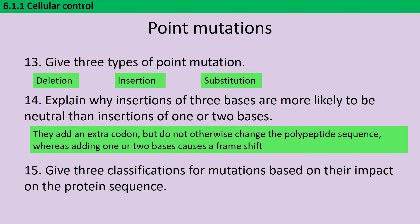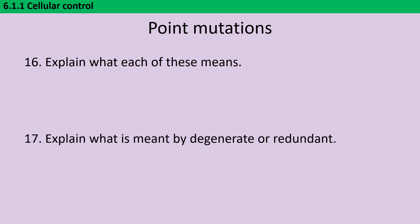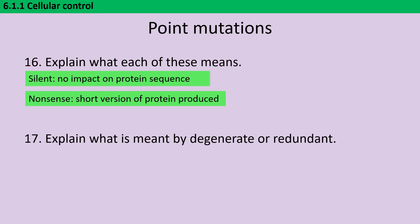If we classify mutations based on their impact on the protein sequence, they can be silent — they don't impact it — nonsense if they lead to a short version of the protein because they're adding a premature stop codon, or missense if they're adding in an alternative amino acid instead. Silent means no impact on the protein sequence, nonsense means a short version of the protein is produced, and missense is an alternative amino acid being inserted.